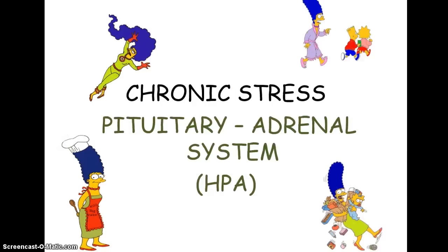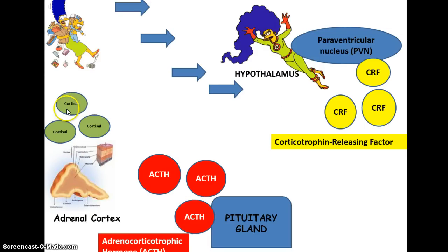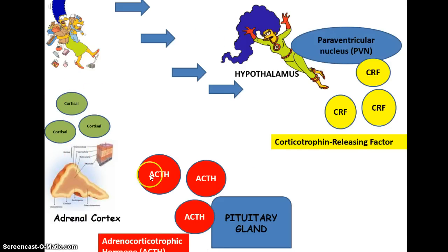For those of you who don't like all the big names, you can get away with just saying: the hypothalamus stimulates the pituitary gland, which releases ACTH, which stimulates the adrenal cortex, and that releases cortisol. You don't actually have to talk about the PVN or CRF if you don't want to, but try to remember them. Hypothalamus, pituitary gland, ACTH, adrenal cortex, and cortisol — those are the main players.